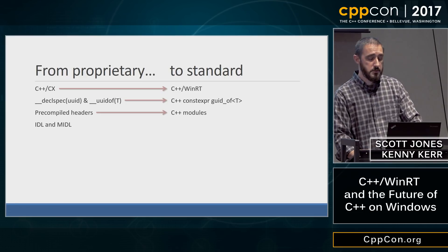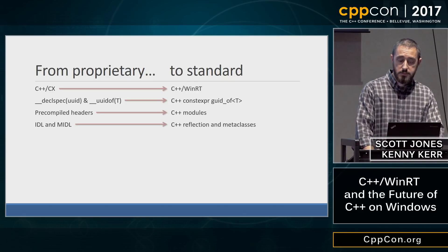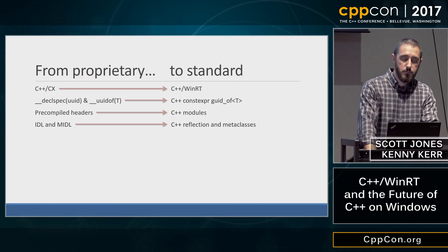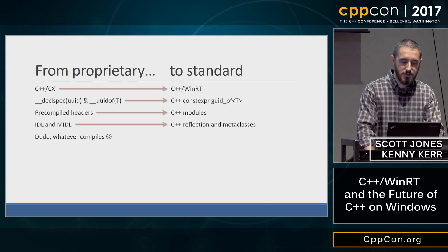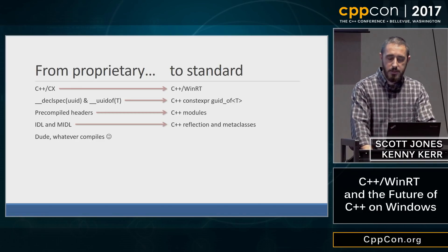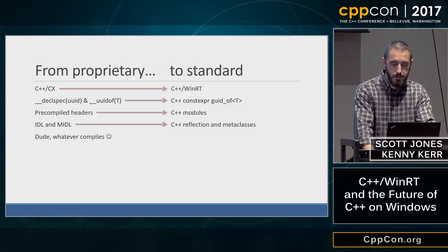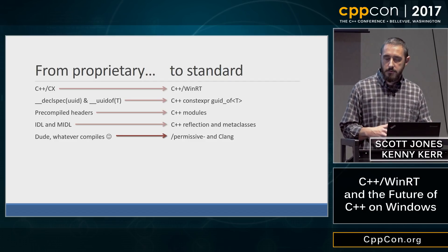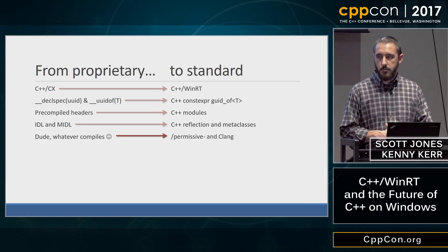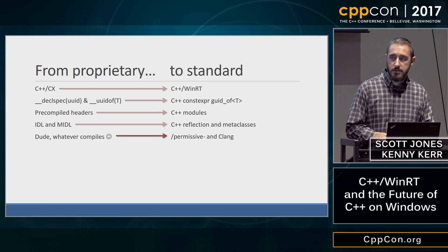IDL is another example — a Microsoft-specific language and compiler we'd love to move away from in favor of standard C++ solutions. We're moving to a world where we try to compile everything with permissive-minus, a Visual C++ flag that restricts you to conformant standard C++. We also use Clang as a way to ensure even greater standard compliance is reached by our libraries.